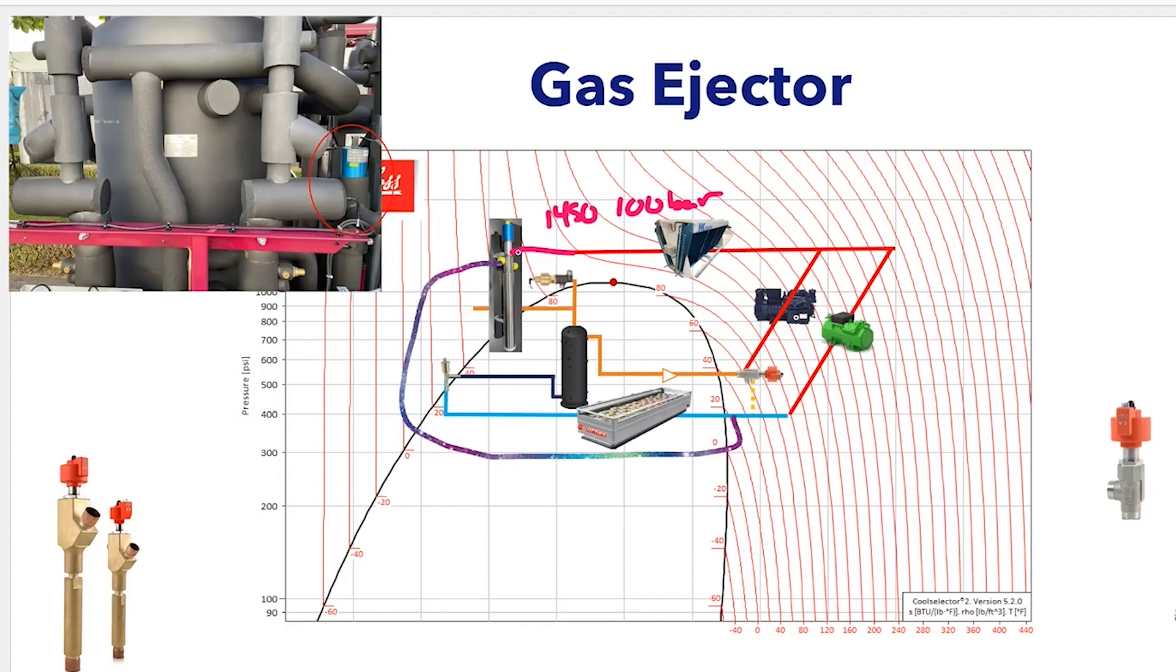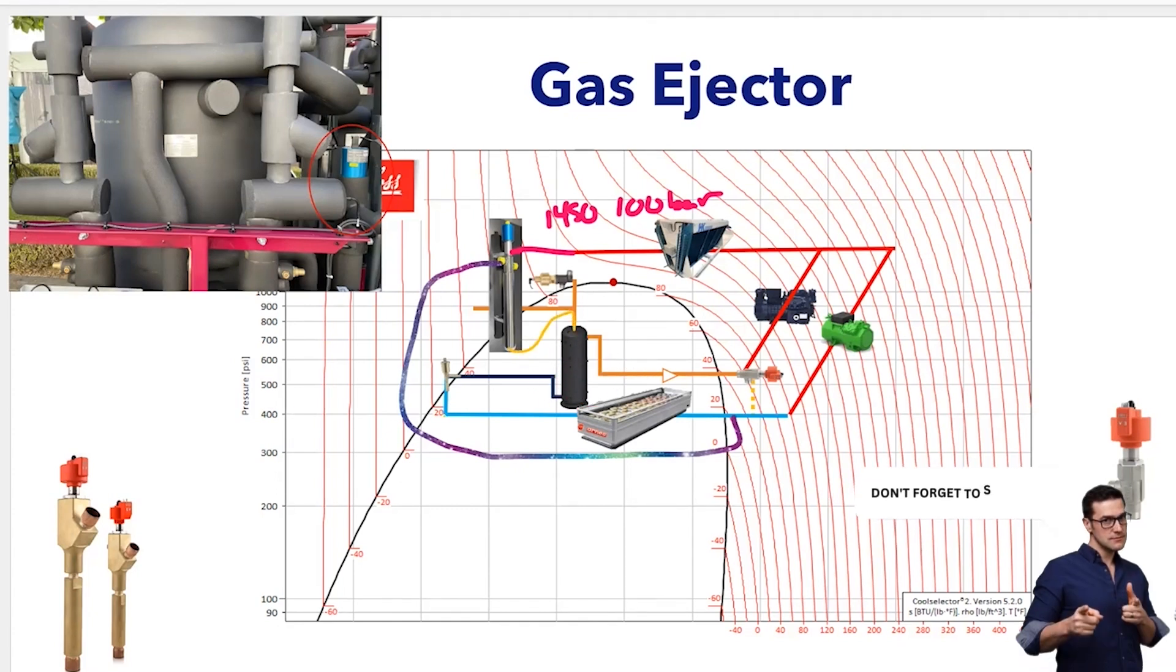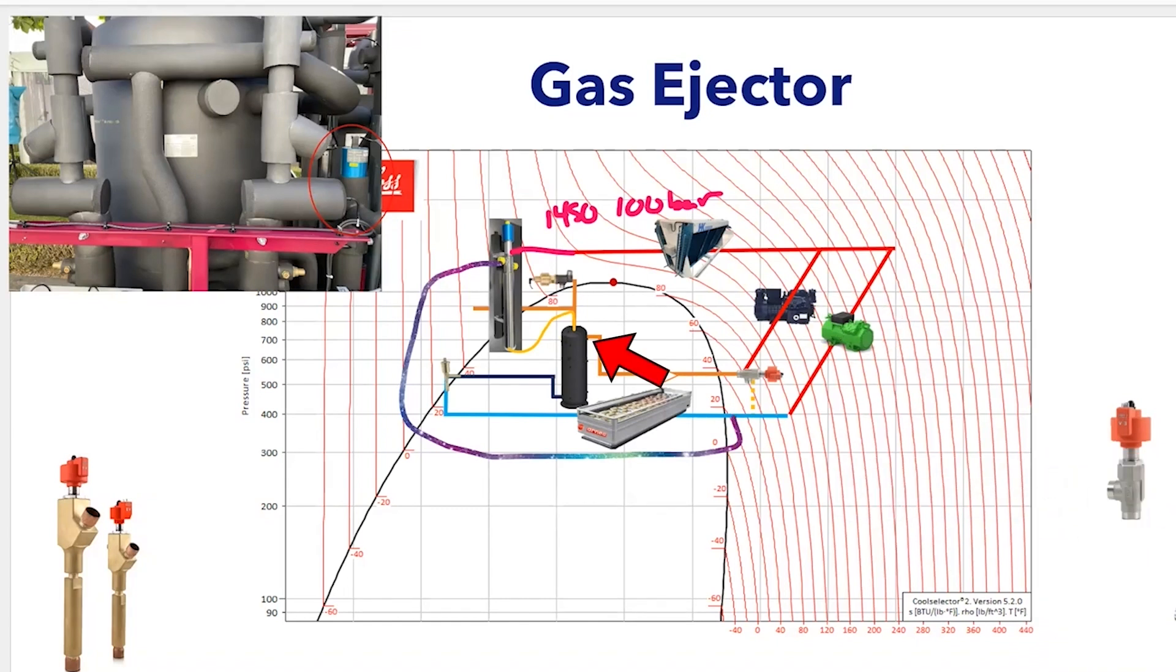I have high pressure gas going into this ejector. It's in a Venturi style. You get this high pressure gas going through, which is actually sucking up this medium temp suction vapor. From this, it goes into the flash tank. Now, instead of this medium temp gas going back to the medium temp transcritical compressors, it's going into the flash tank and up into the parallel compressors.